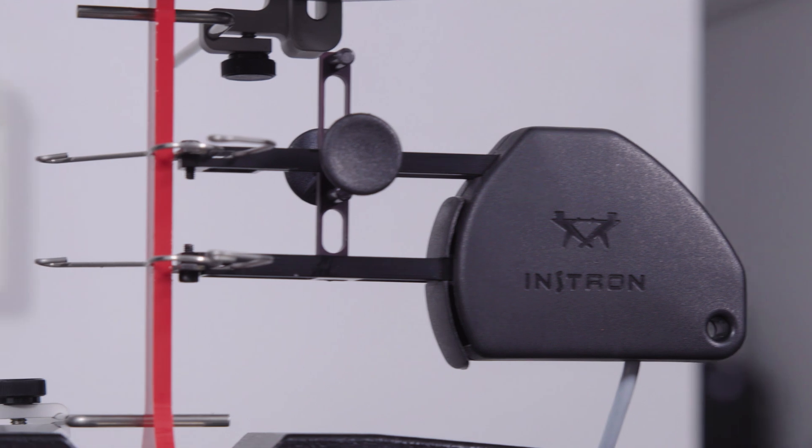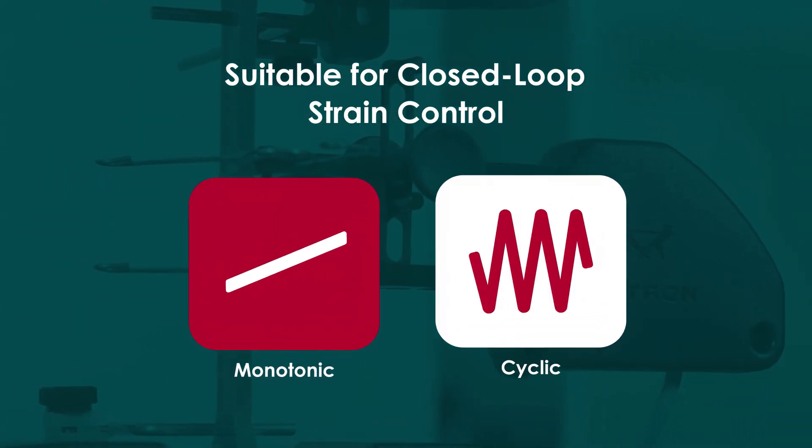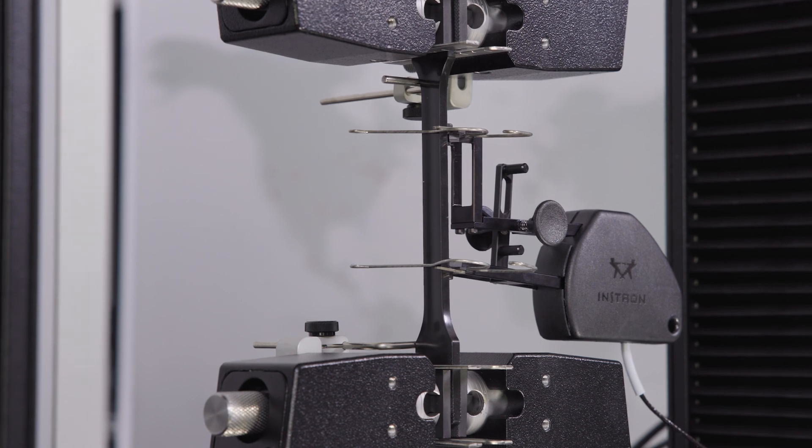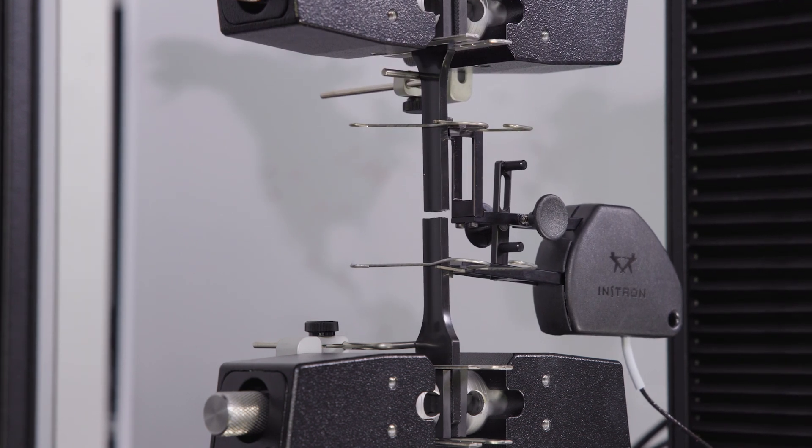It is suitable for closed-loop strain control for both monotonic and low-rate cyclic testing, and the rugged construction also allows it to be left on through failure when testing most materials.